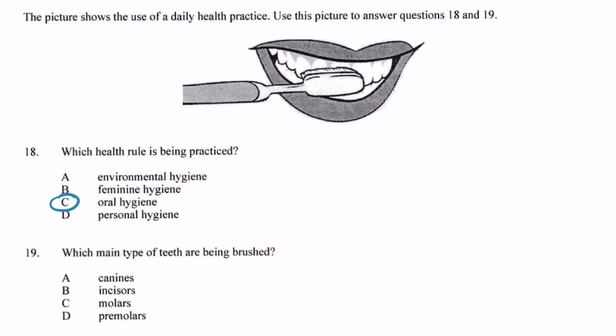Based on the diagram on the exam paper, we see that the teeth that are being brushed are located in the front upper jaw, and so those would be the incisors. And so the answer for question number 19 would be B.